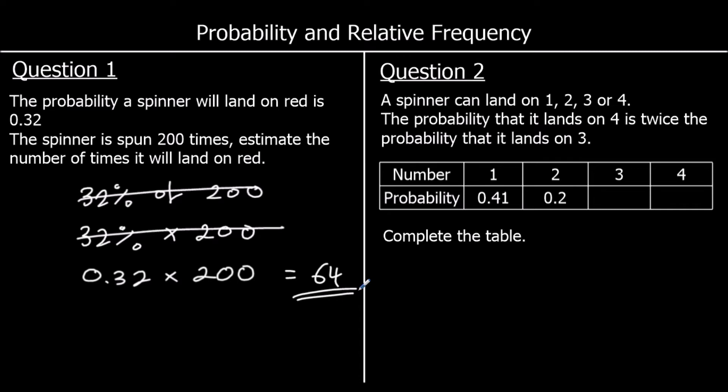Question two. A spinner can land on 1, 2, 3 or 4. The probability it lands on 4 is twice the probability it lands on 3. So if the probability it lands on 3 is x, the probability of 4 is double that, so 2x. And we know all probabilities of everything that can happen has to add up to one whole. So at the moment, we've got 0.41 and 0.2, which is 0.61. So what's missing? 1 minus 0.61. So we've got 61% at the moment. How many more do we need to get to 100%? That is 39%.